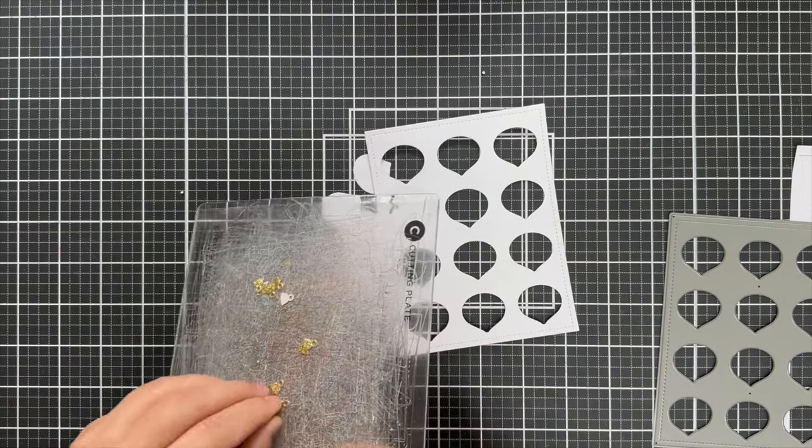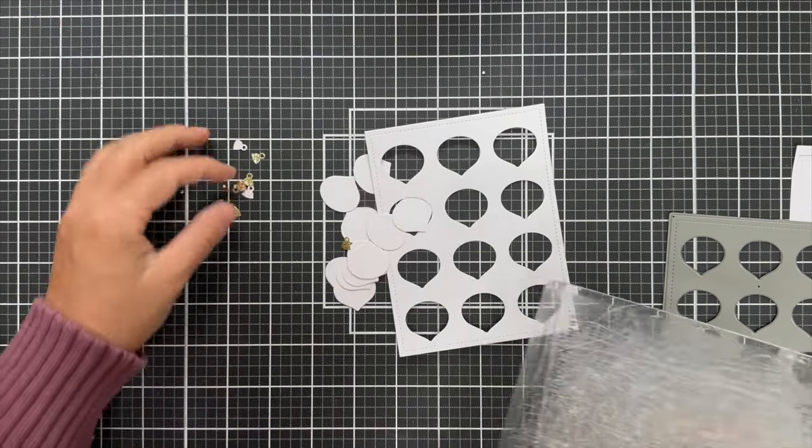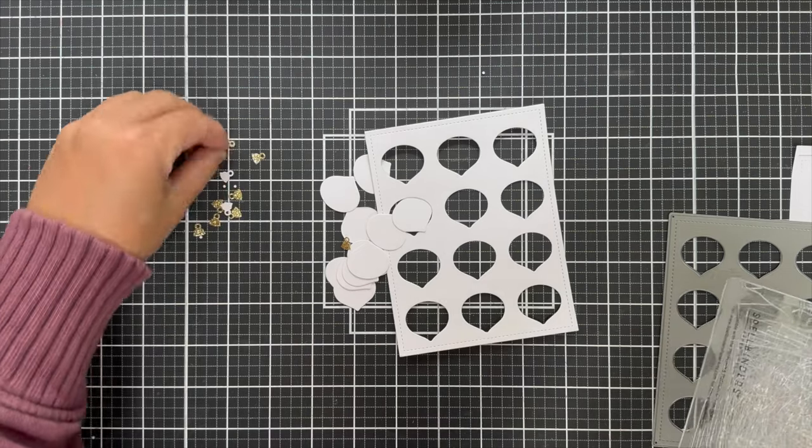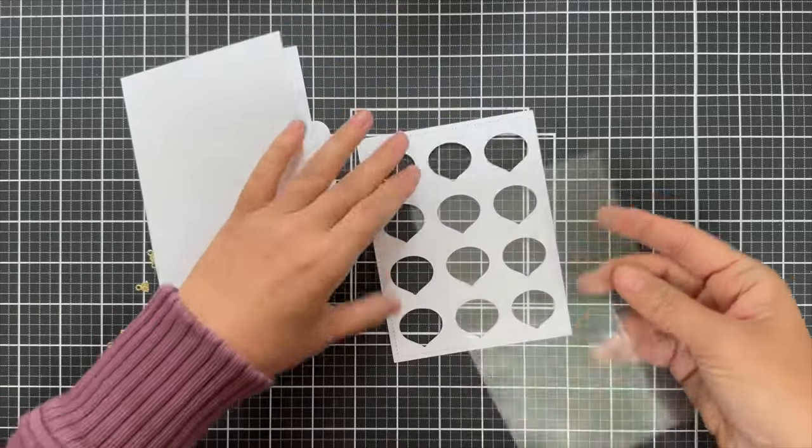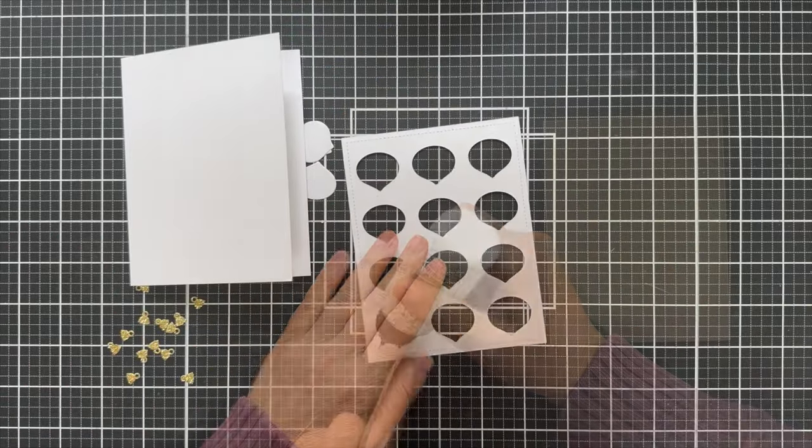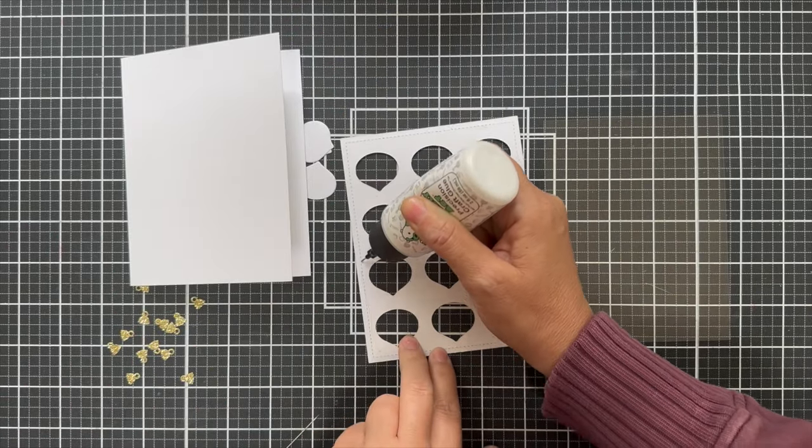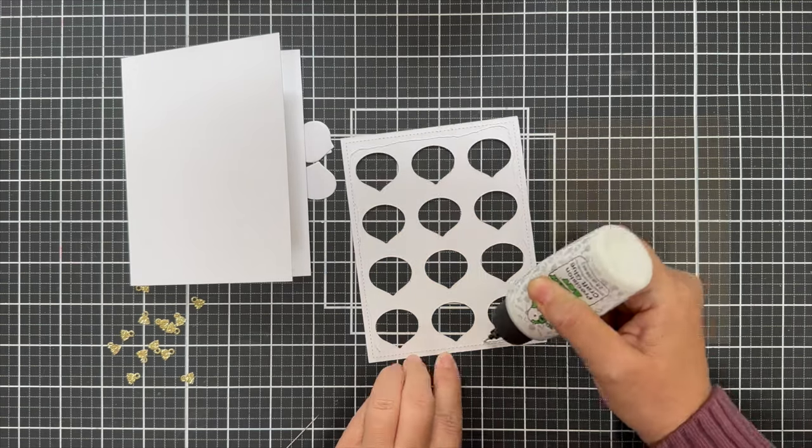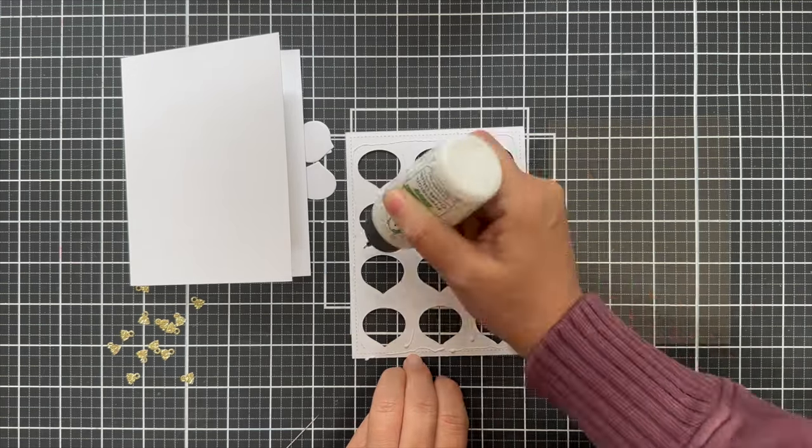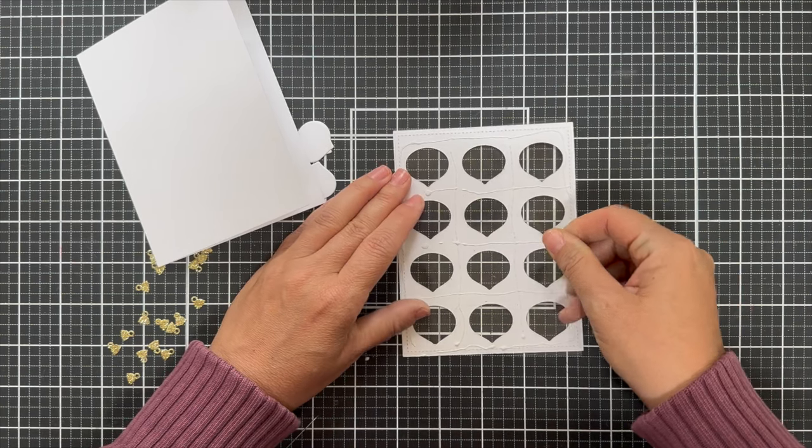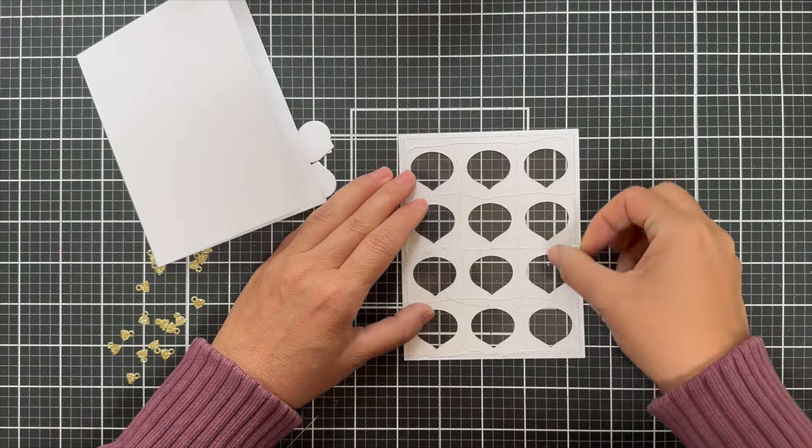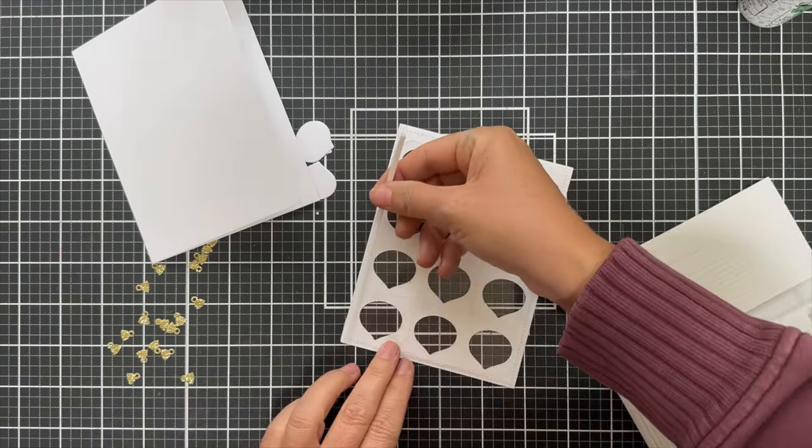I die cut the little ornament toppers out of some glitter gold cardstock. I believe you get 12 little ornament toppers, which pairs with the 12 ornaments that you get in the grid cover. So I trimmed a piece of acetate to size four and a quarter by five and a half. I'm going to glue it to the back of this ornament grid cover die cut. I just use some liquid glue. You can use whatever adhesive tickles your fancy.